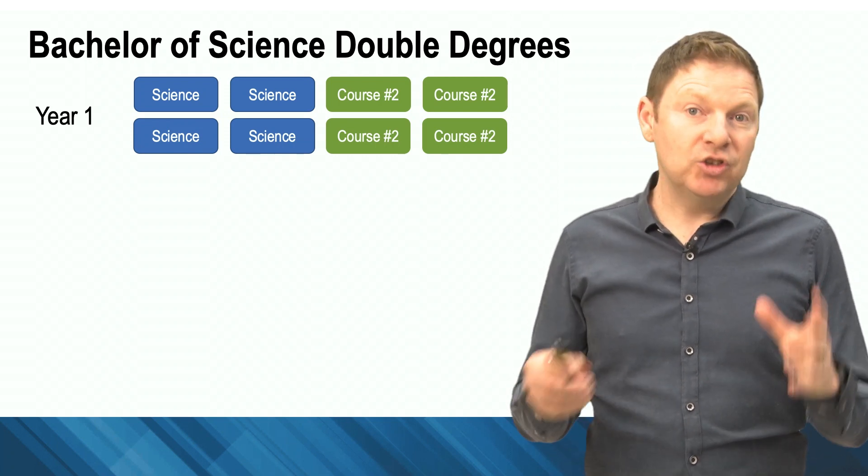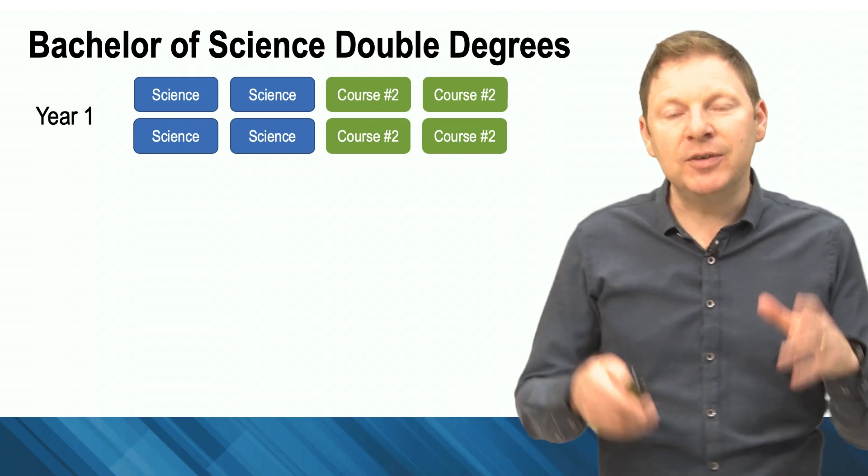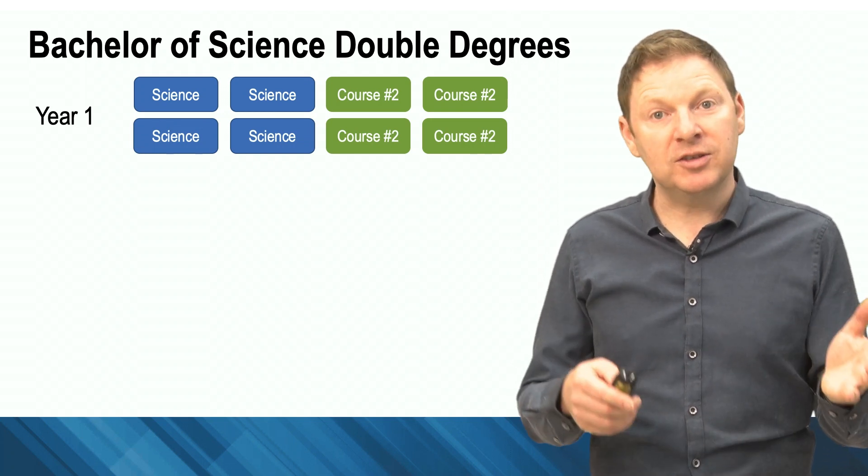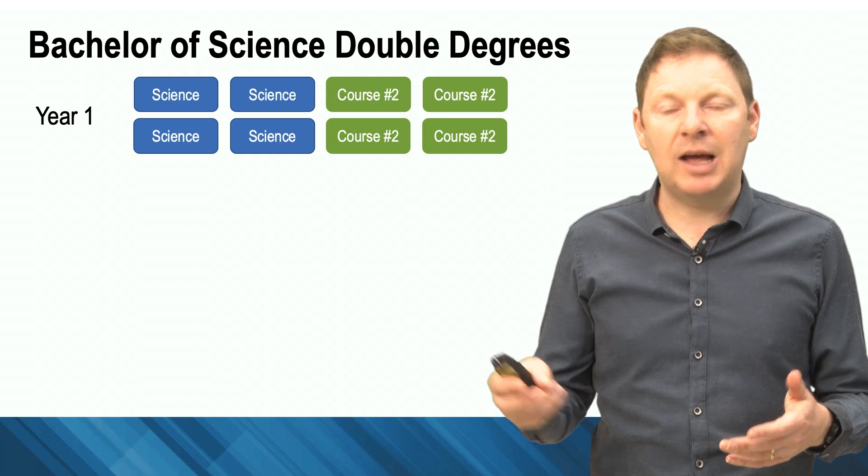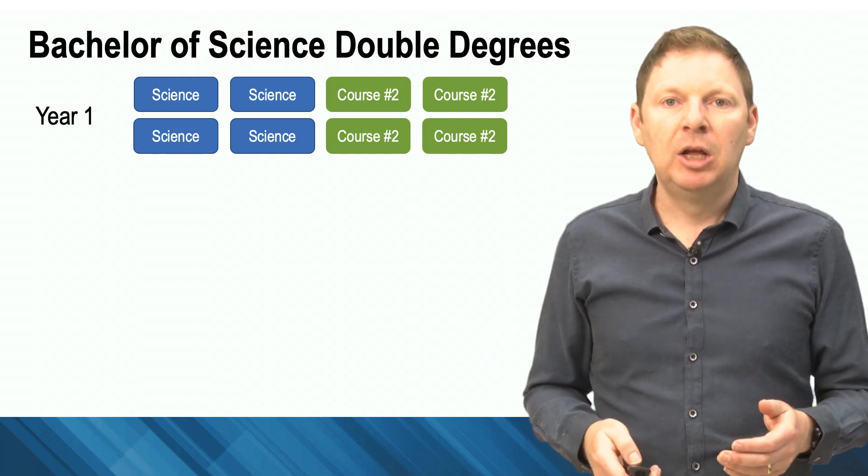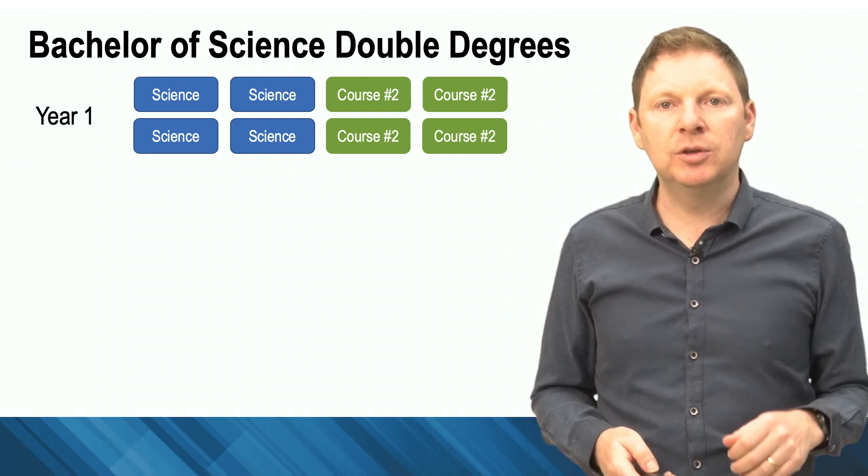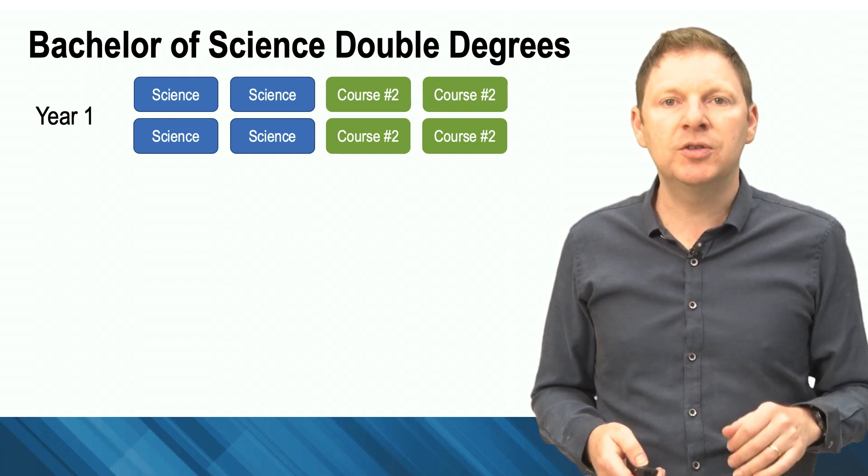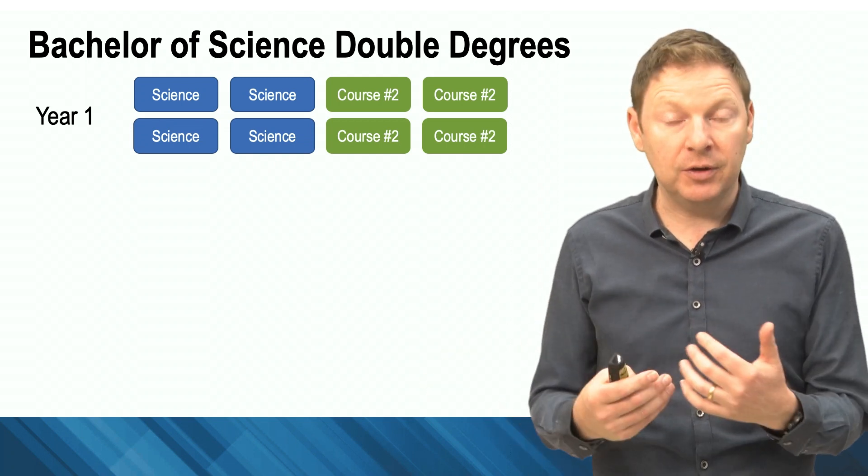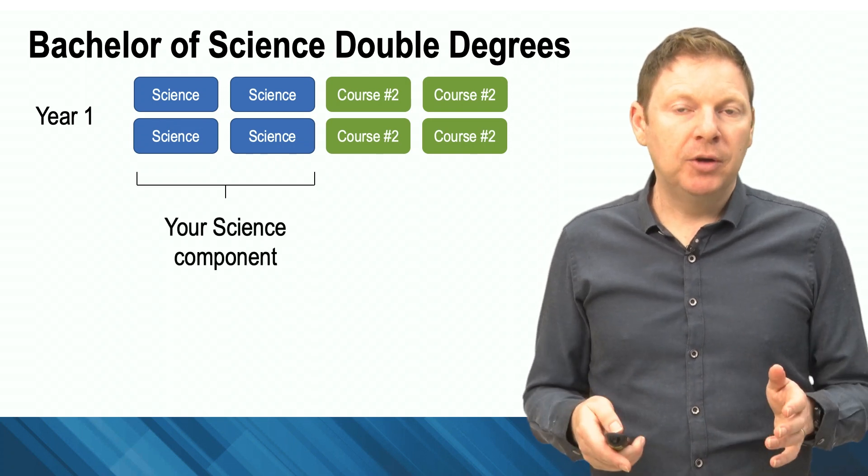You can see on this slide here we've got some blue boxes and some green boxes. These are the individual subjects that you're going to enrol in in the first year of your course. The blue ones are science units and the green ones are subjects in whatever else it is you're doing. Because you're a mixed bunch - some of you are doing science law double degree, science art, science commerce - so we'll just call that your other degree for the time being. We're going to focus on the science.